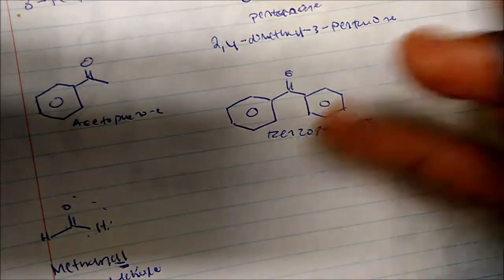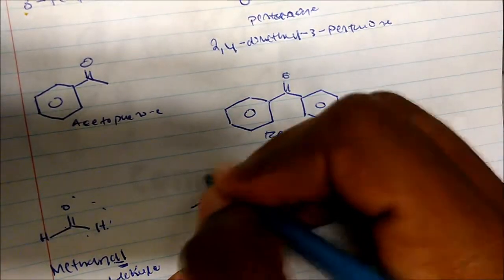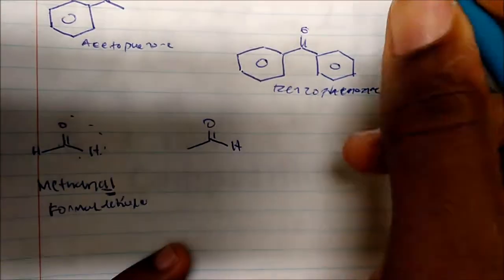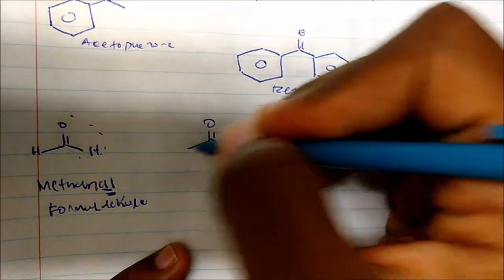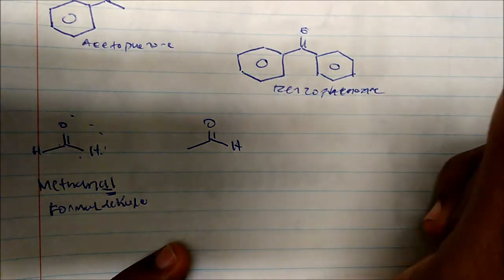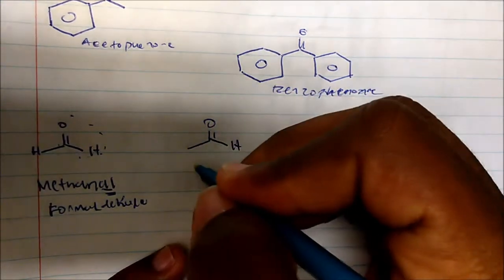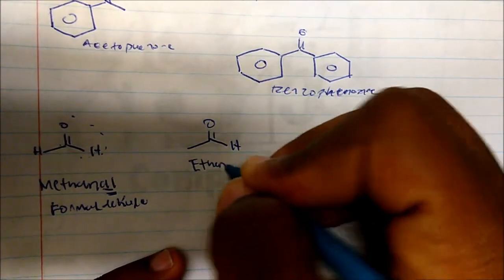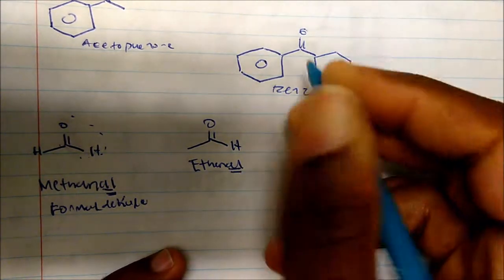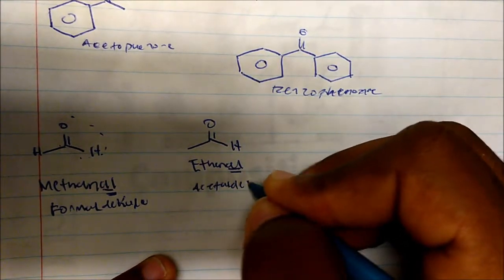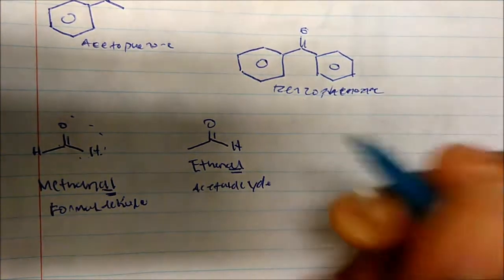What would we name this aldehyde? Counting along the chain: one, two — for an alkane this would be ethane, but because we're dealing with aldehydes, this is ethanal. The common name for this is acetaldehyde.